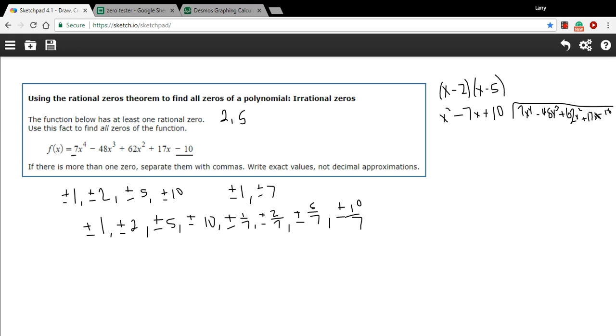All right. So, the first question I'd ask is what do I need to multiply this x squared by to get 7x to the fourth? The answer is 7x squared. And we'll do the division, the multiplication here. So this is 7x to the fourth. 7x squared times a negative 7x is going to be minus 49x cubed. And 7x squared times 10 is going to be plus 70x squared.